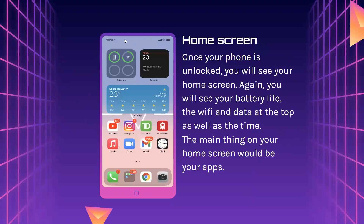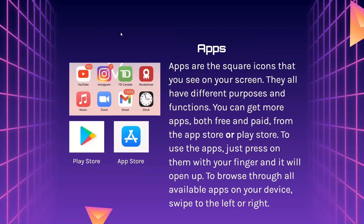Moving on to your home screen. Once your phone is unlocked, you will see your home screen. You will see your battery life, Wi-Fi, and data at the top, as well as the time. Apps are the square icons you see on your screen; they all have different purposes and functions. You can get more apps, both free and paid, from the App Store or Play Store if you have an Android. To use an app, just press on it and it will open up. To browse through all available apps on your device, swipe to the left or to the right.